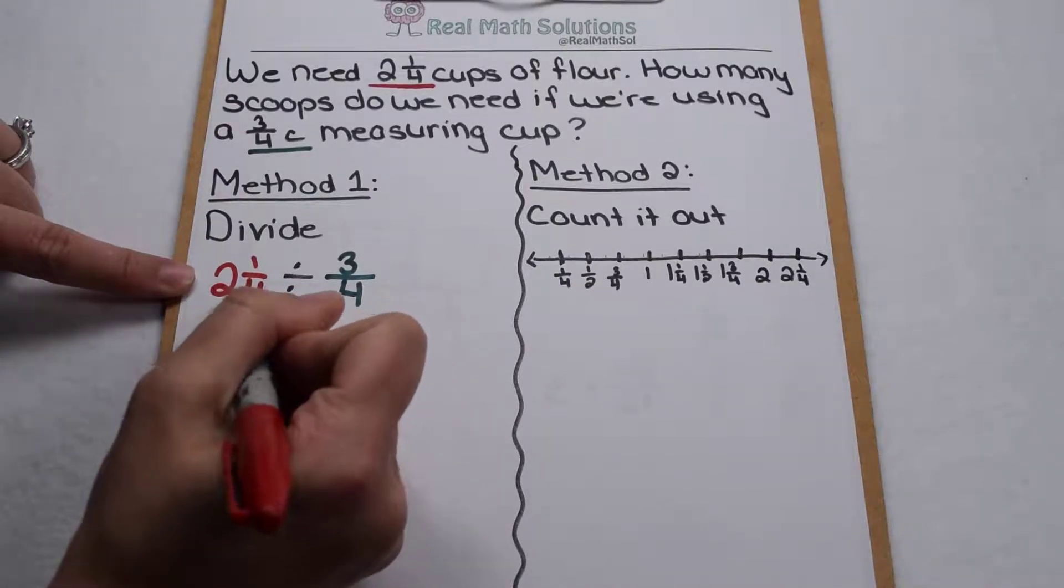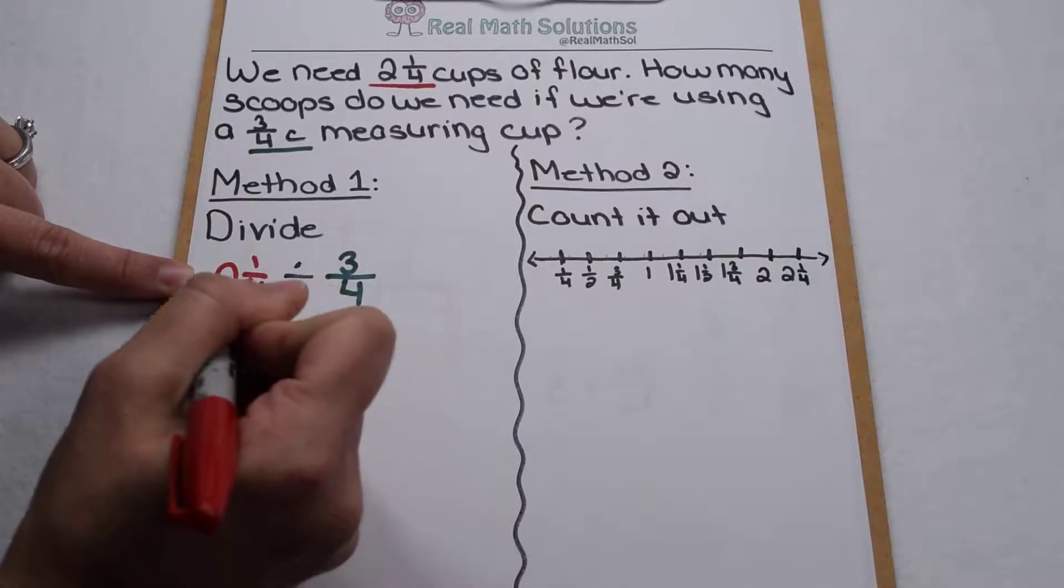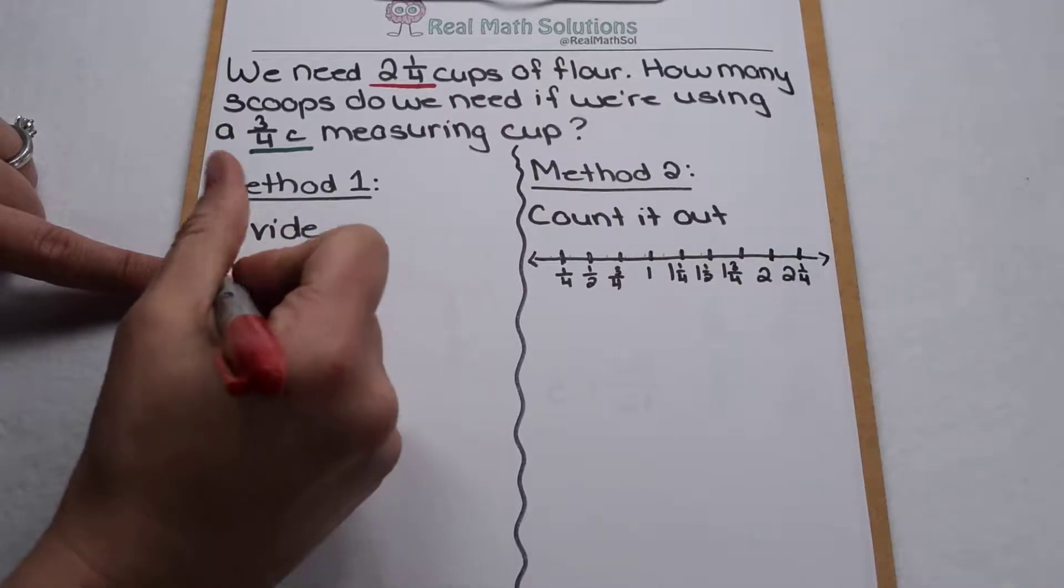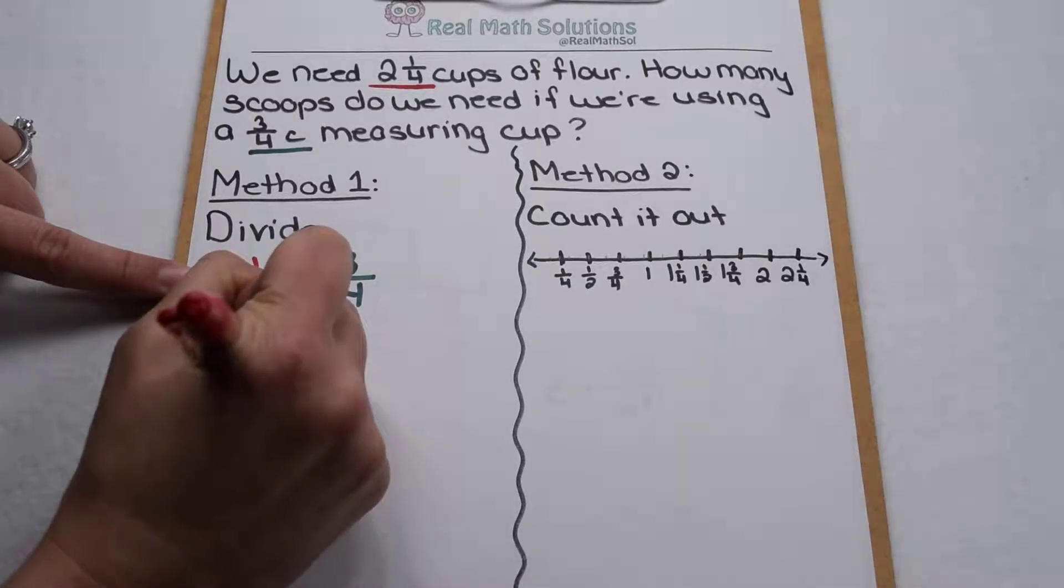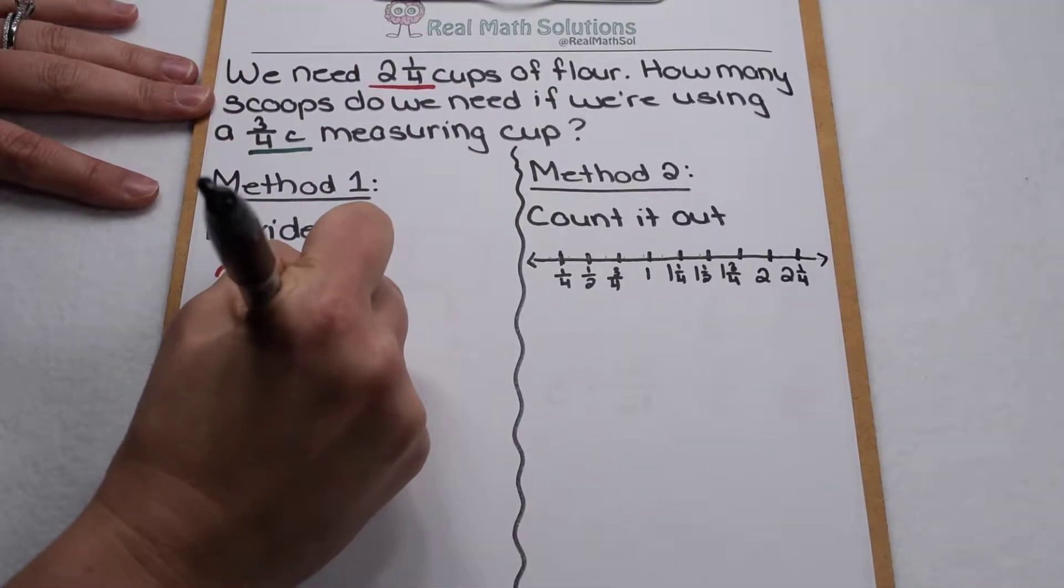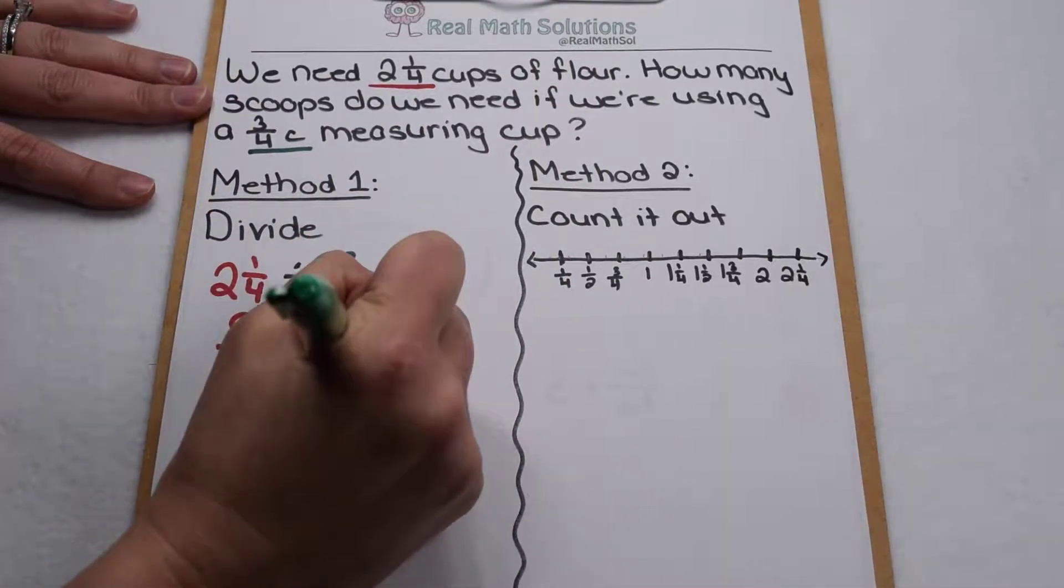Well when we're dividing with mixed numbers and fractions, the first thing I need to do is make everything improper. So if I'm going to change two and one fourth to an improper fraction, I first need to multiply four times two to give me eight. Eight plus one to give me nine. So as an improper fraction, two and one fourth is going to become nine fourths. Since three fourths is already a fraction, it's going to stay that way.